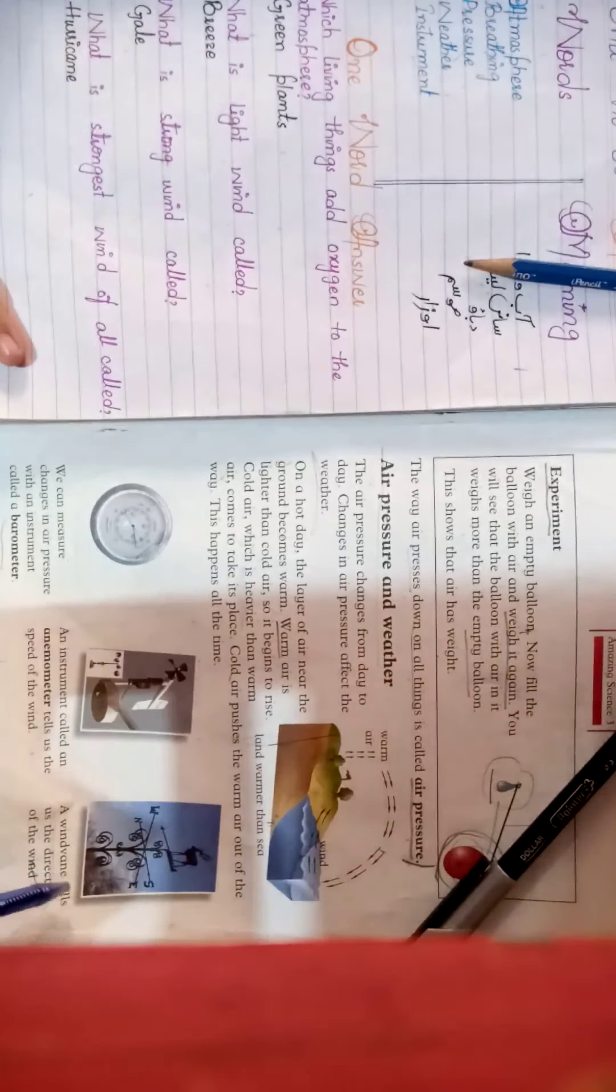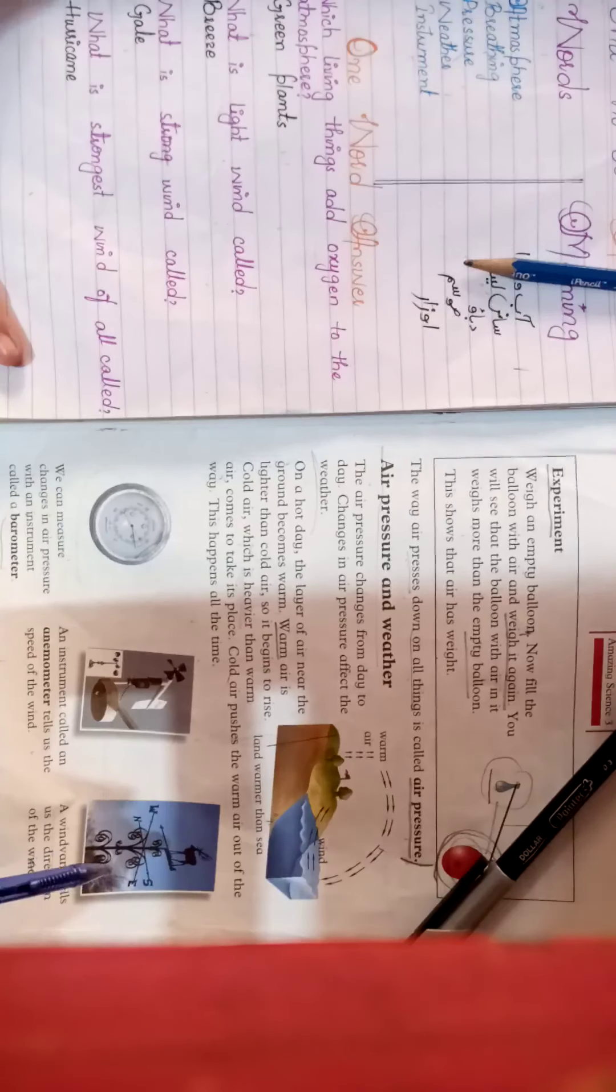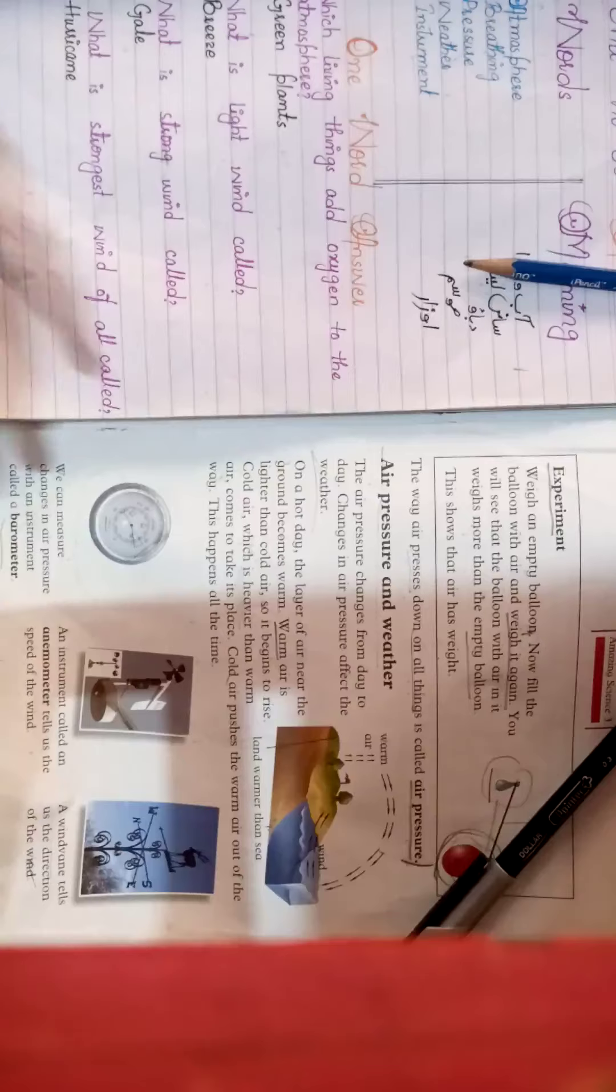A wind vane tells us the direction of wind. This means which direction the wind is going. Now, we have case number 24.